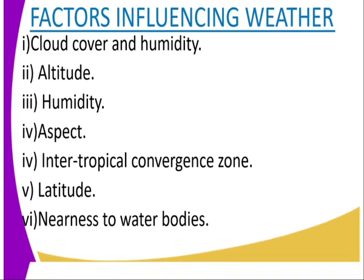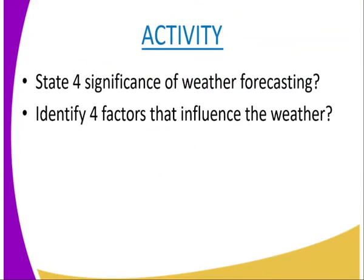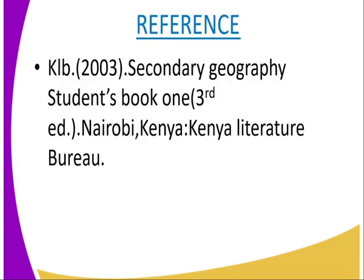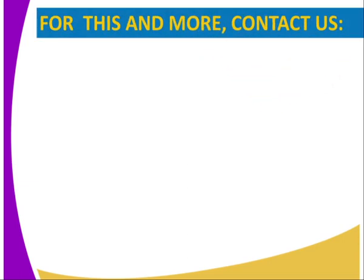That marks the end of the topic. Here is your assignment: Number one, explain the significance of weather forecasting. Number two, identify four factors that influence the weather. For more information, you can visit the KALB 2003 Secondary Geography Student Book 1. Thank you.